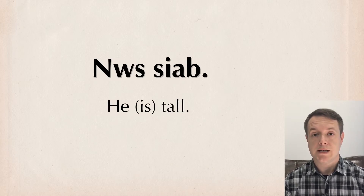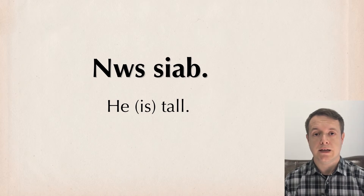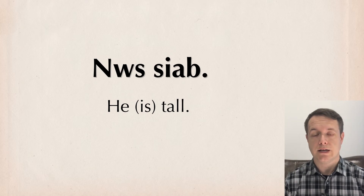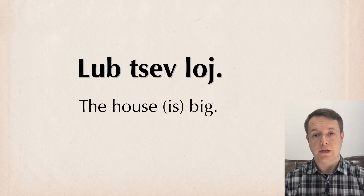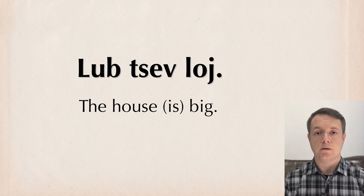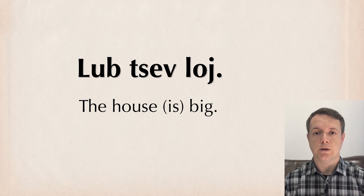How about a few more examples just to help remember. 'Nǔ xìa' — he is tall. Not 'Nǔ yǎo xìa,' but 'Nǔ xìa' — he is tall. 'Lù cèi lò' — the house is tall. The word 'is' is contained in 'lò.'